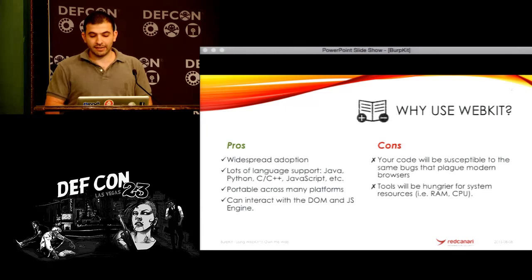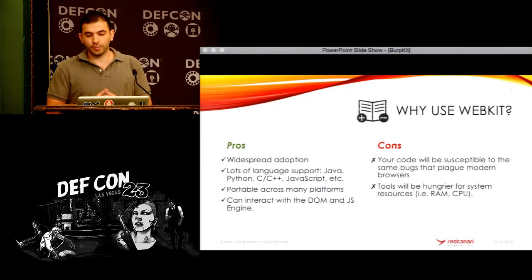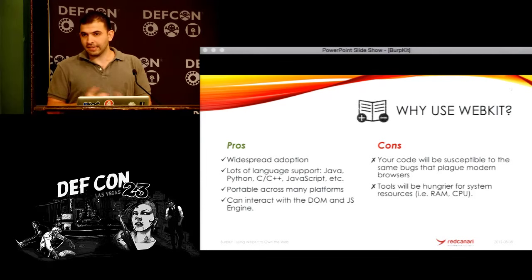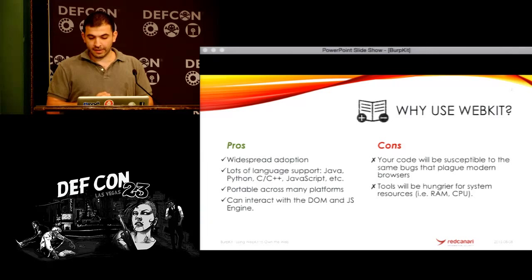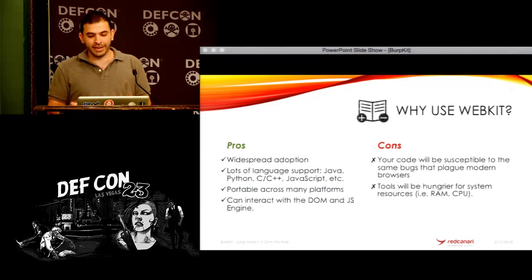WebKit can interact with the DOM and JS engine — it gives you basically an API. The cons are that you're going to be susceptible to the same bugs that affect the WebKit libraries. So if there's a use-after-free that somebody finds, your tool is probably going to be susceptible to that same thing. It's also hungrier for system resources — that's expected because you have a whole bunch of stuff going on to render the page, execute the JavaScript, et cetera. But those two cons didn't really drive me away from WebKit. I mean, okay — the code is susceptible to bugs, but really I'm assessing client websites, and unless they want to exploit me, I'm not really worried.